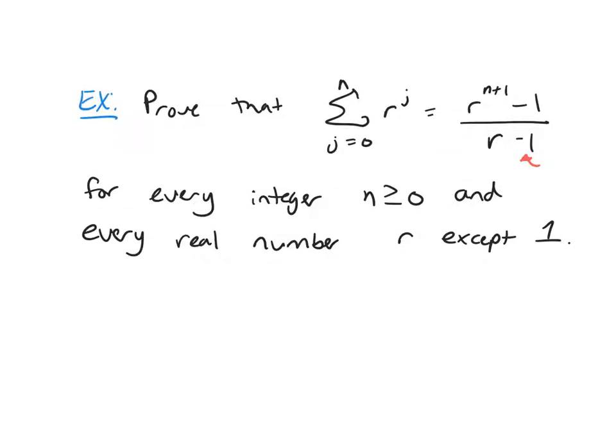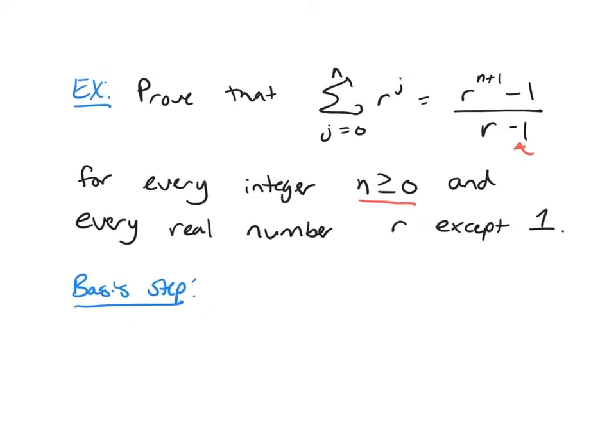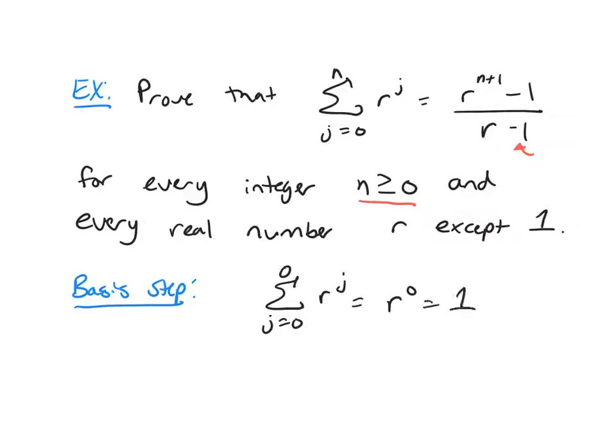Remember our first step is a basis step. You look at your integer, so here n is my integer, the smallest value n could be is 0. So we're going to start with n equals 0, and we're going to plug it in to the left-hand side and see what we get. So if I plug in n equals 0, this is just r to the 0, which is 1.